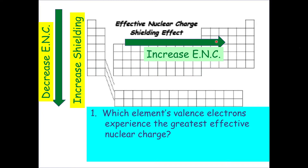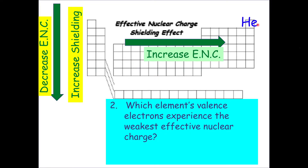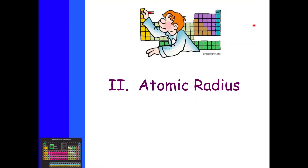Which element's valence electrons experience the greatest effective nuclear charge? That's probably helium — it has two protons but the least amount of shielding. Which element's valence electrons experience the weakest effective nuclear charge? That's francium. These two opposite extremes will be a common theme when we get to atomic radius.